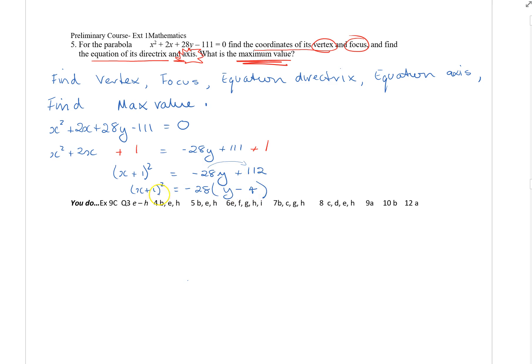So from there, well I certainly could identify the vertex. So the vertex is my minus one and four. I can't identify the coordinates of the focus. I know it will be negative because it's got a negative here, and it's back in the original format, the x squared is 4ay, so I know it's going to be upside down.